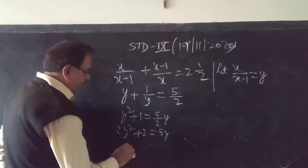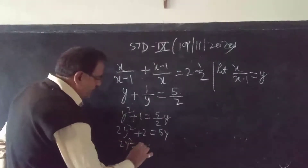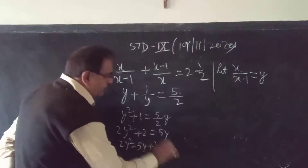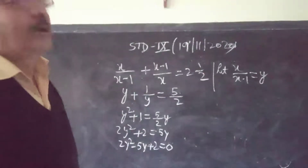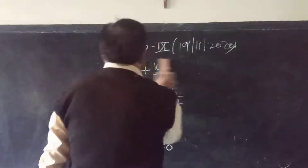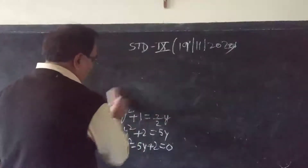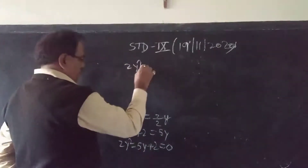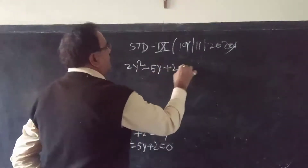We can rewrite this as 2y² − 5y + 2 = 0. Let's redo this step clearly. The standard form of the equation is 2y² − 5y + 2 = 0.